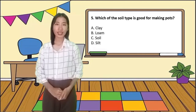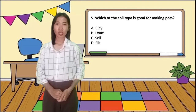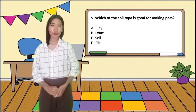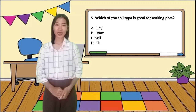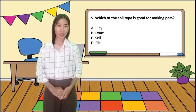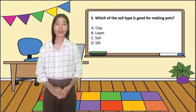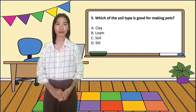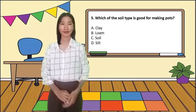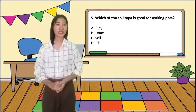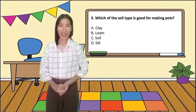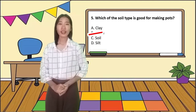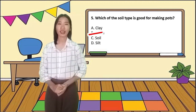For the last number: which soil type is good for making pots? A. Clay, B. Loam, C. Soil, D. Silt. What is the answer, class? Letter A, teacher — clay. Yes, the answer is letter A, clay.